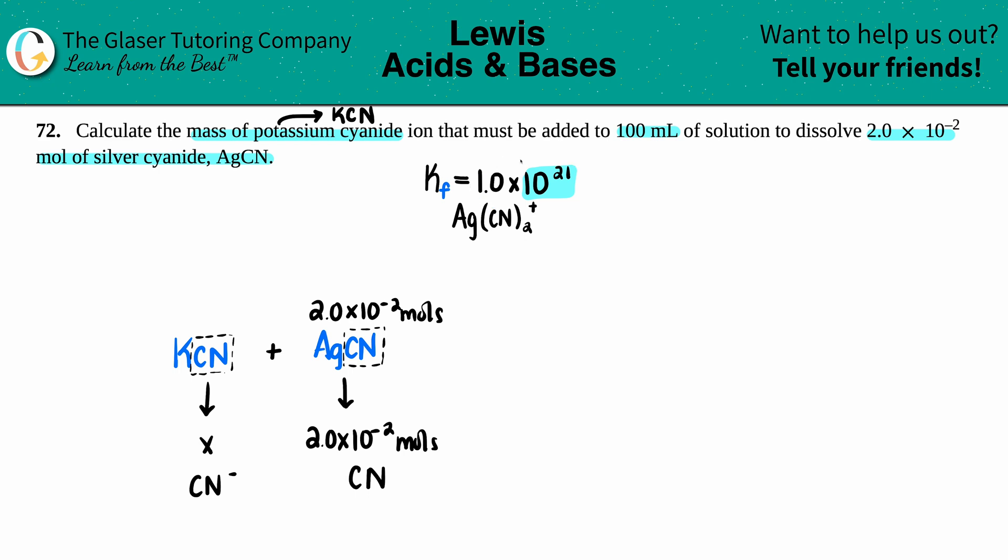This is a product in our formation equation. So when these cyanides come together, chances are you're going to basically form that complex ion Ag(CN)2. Well, in this case we have two cyanides.